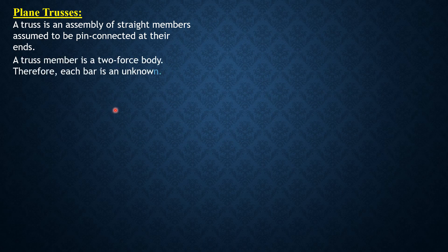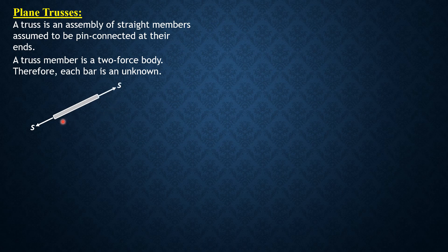A truss member is a two-force body, therefore its bar is an unknown. If we have here a truss member, then we always assume the stress in that member to be in tension. Therefore, the unknown is the bar force or the stress of this member, and we always assume the member to be in tension.